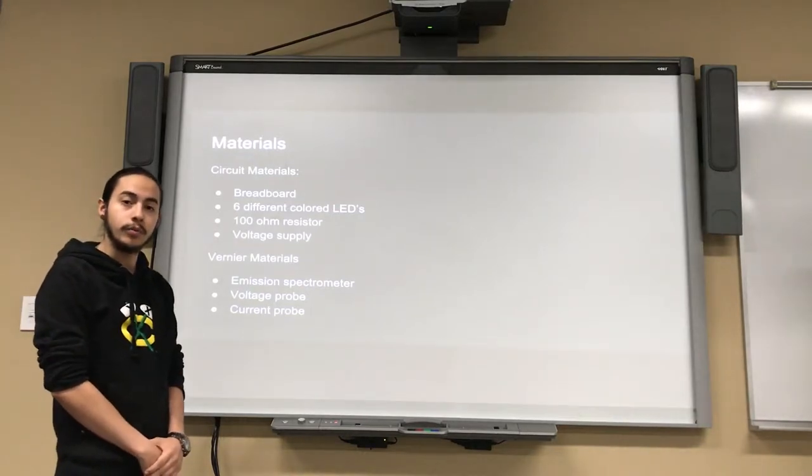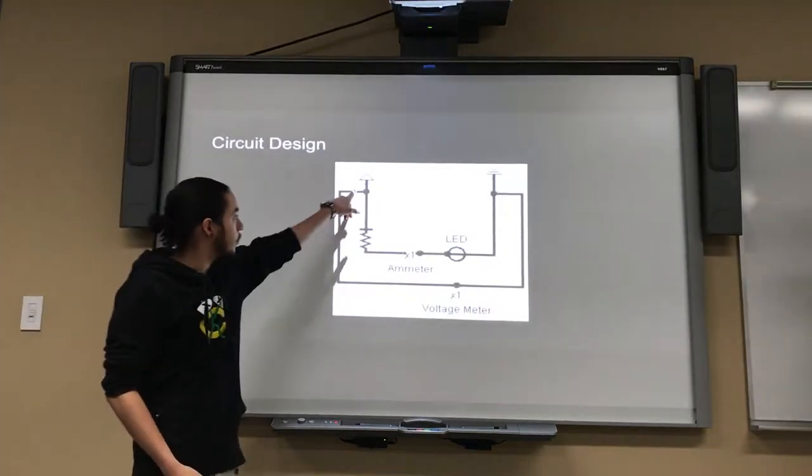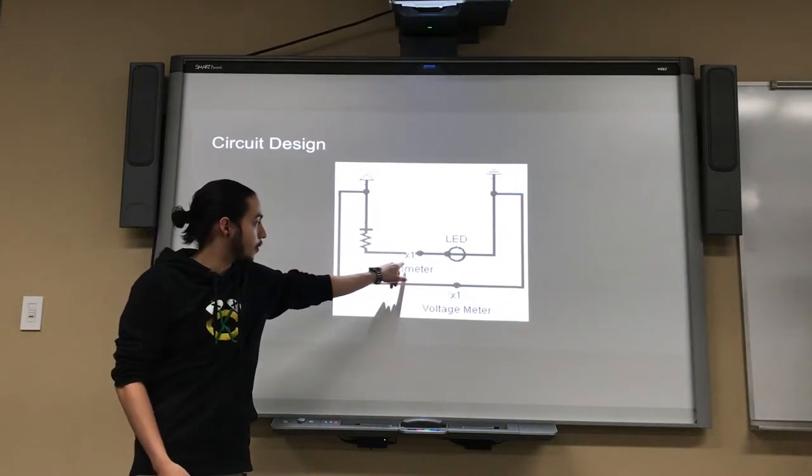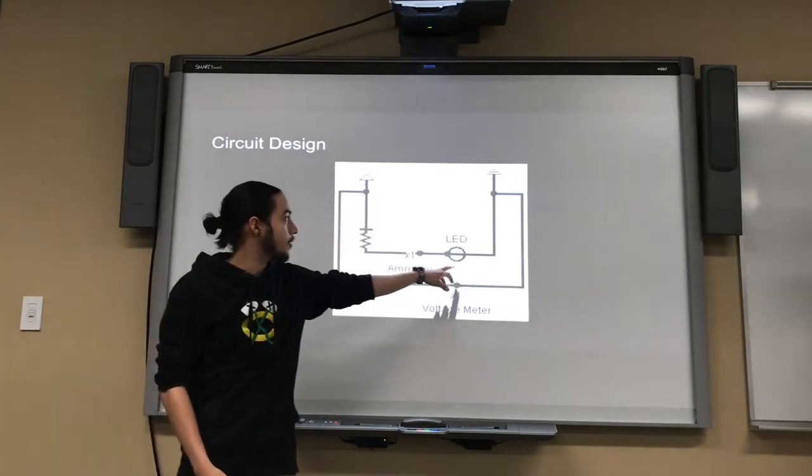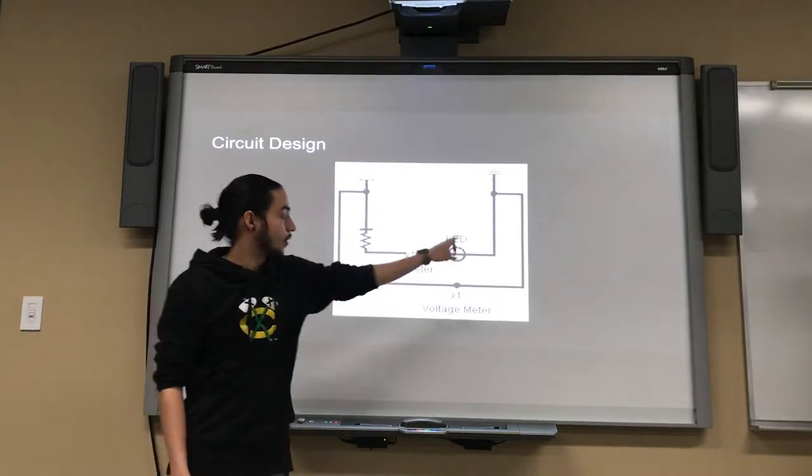Our circuit design is fairly simple. It comes in with our five volt power supply into our 100 ohm resistor which is then going in series with our ammeter to our LED and then over the ground, and we have our voltage meter measuring the voltage across the entire circuit.